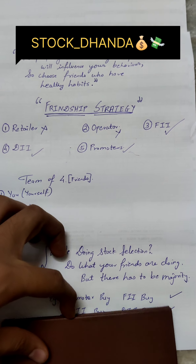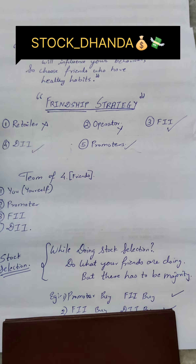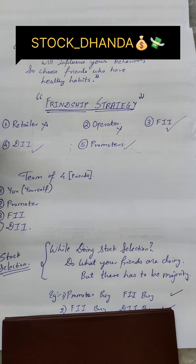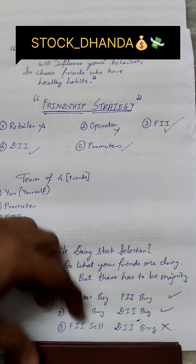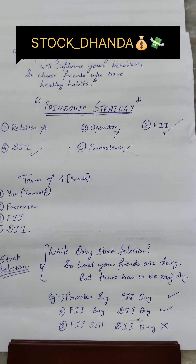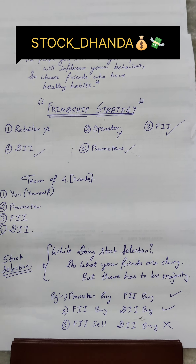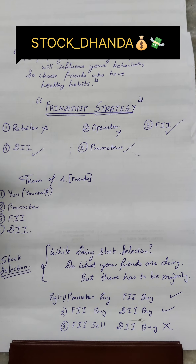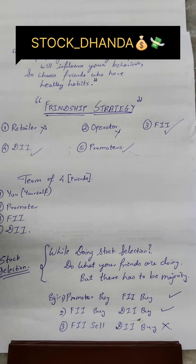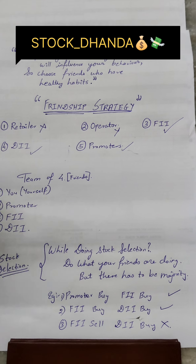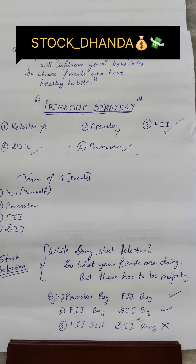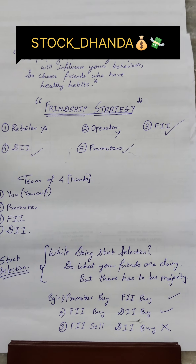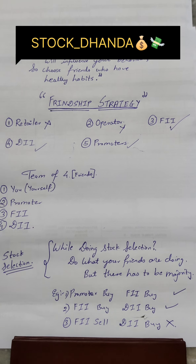For example, if promoter ne stock buy kiya hai and FII ne bhi buy kiya hai, then we will buy our stock. Similarly, if FII ne buy kiya hai and DII ne bhi buy kiya hai, then also we will buy. But if FII ne sell kiya hai and DII ne buy kiya hai, there is no majority, so we won't buy.